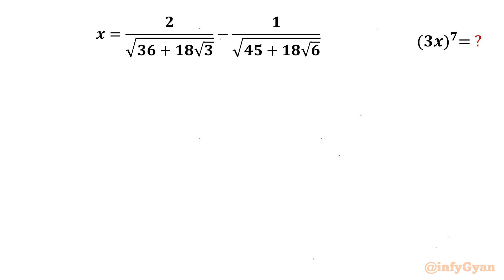Welcome back to InfiGyan, my dear friends. In this video we have one very interesting algebraic problem. Here we have to evaluate the expression (3x)^7, where x is equal to 2 over the square root of (36 + 18√3) minus 1 over the square root of (45 + 18√6). So let's get started by writing x equal to 2 divided by that square root.